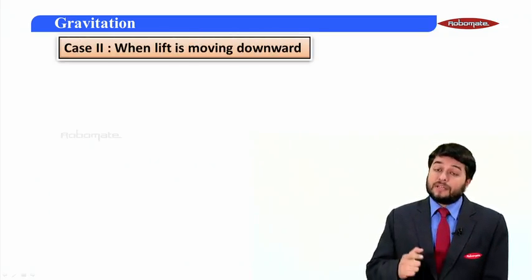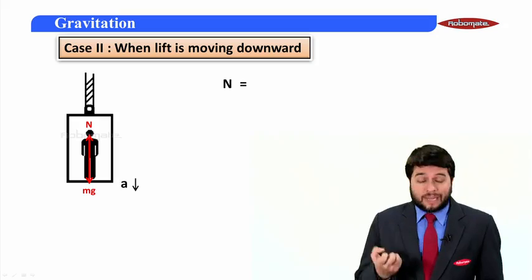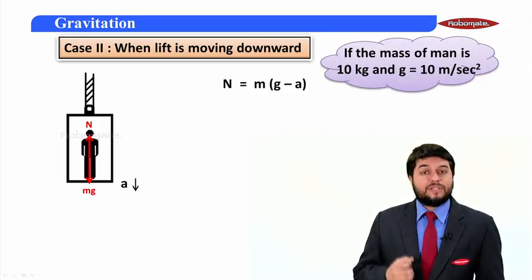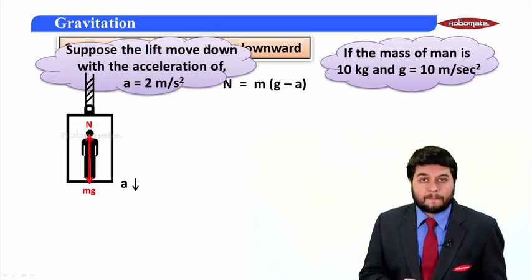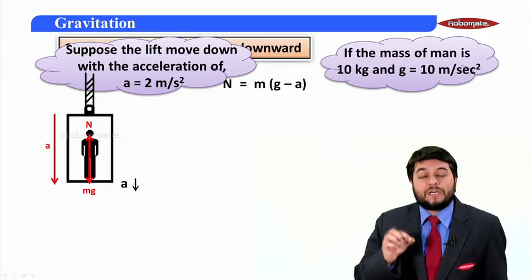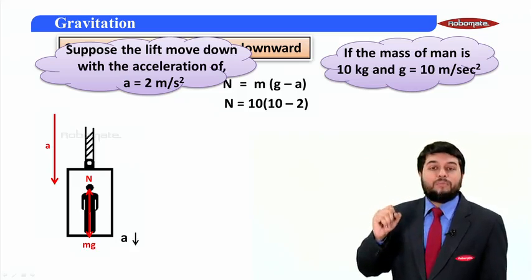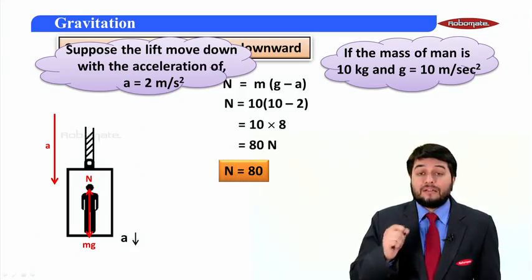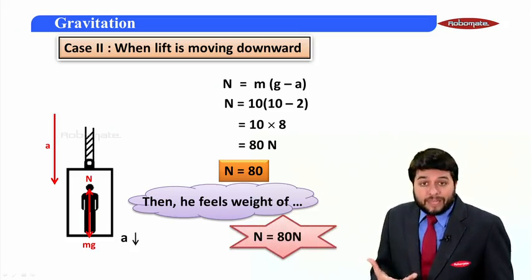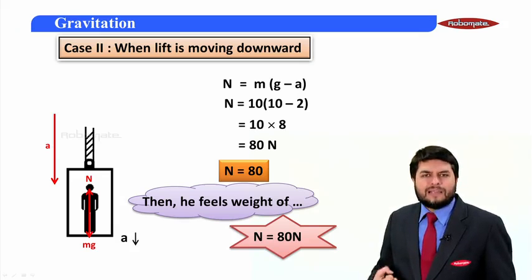Now the second condition — the lift is moving downwards. The normal reaction is N = m(g − a). With mass = 10 kg and g = 10 m/s², if the lift moves down with an acceleration of 2 m/s², then N = 10 × (10 − 2) = 10 × 8 = 80 N. So when the lift is moving down, that person feels a weight of 80 N — less than the 100 N felt when stationary.